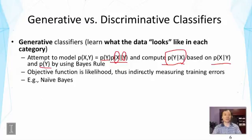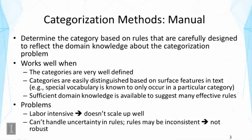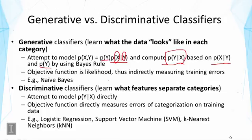The other kind of approaches are called discriminative classifiers. These classifiers try to learn what features separate categories — they directly tackle the problem of classification or separation of classes. Discriminative classifiers attempt to model the conditional probability of the label given the data point, P(Y|X), directly. The objective function tends to directly measure categorization errors on training data. Examples include logistic regression, support vector machines, and k-nearest neighbors. We will cover some of these classifiers in detail in the next few lectures.